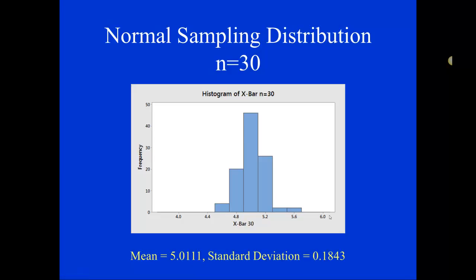So when we start with a normal distribution as our population, then the distribution of values of x bar will be normally distributed regardless of the sample size. So that's pretty cool. So if we start with a normally distributed population, then we're going to end up with a normally distributed sampling distribution.